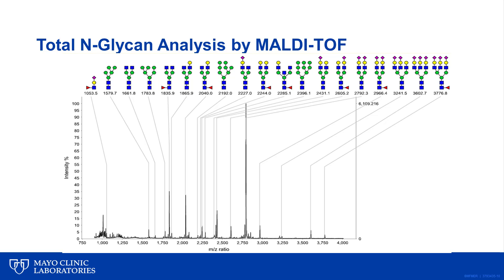Abnormal glycans are directly detected via the instrument, and this complements the current CDG testing by providing an analysis that is not isolated to a single surrogate glycosylated protein such as transferrin, and yields information on structural abnormalities that may in turn guide molecular testing.